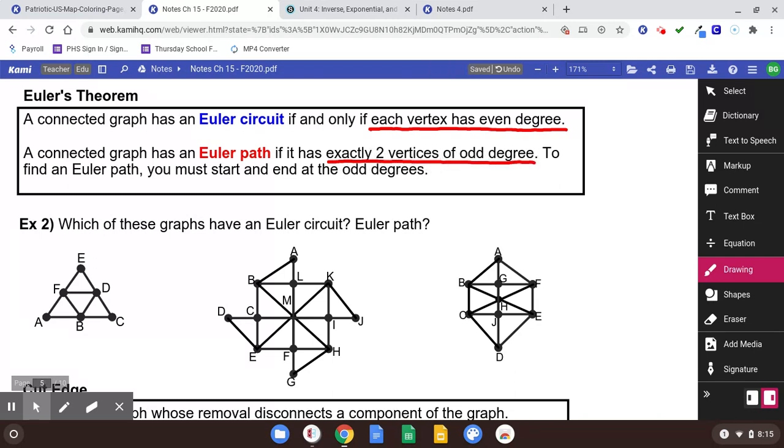Euler's theorem says a connected graph has an Euler circuit if and only if each vertex has even degree. Underline that. All it's going to take is you look at a graph, and if every single one of the vertices has an even degree, you'll know that it has an Euler circuit. An Euler path, a connected graph has an Euler path if it has exactly two vertices of odd degree. To find an Euler path, you must start and end at the odd degrees.